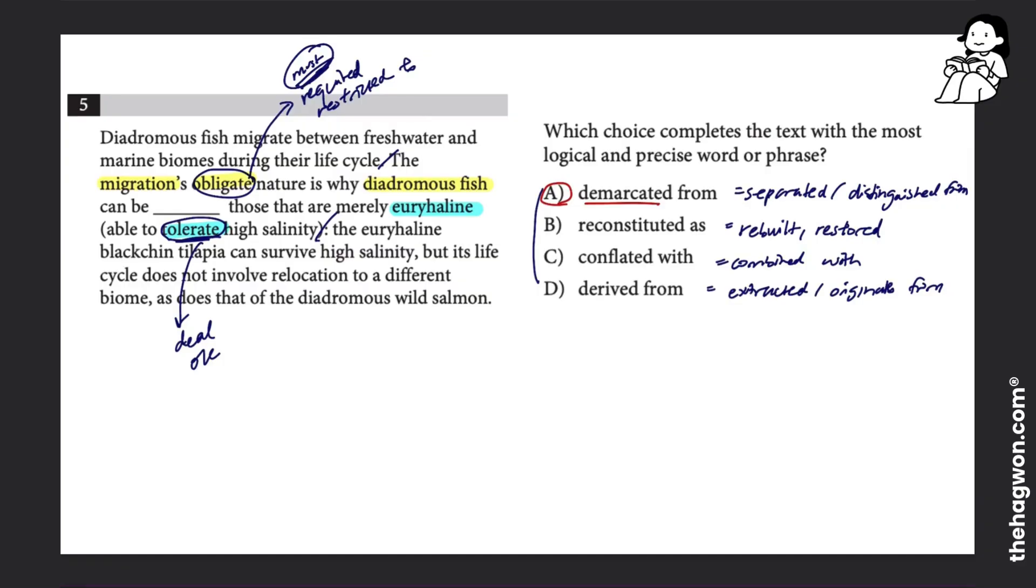And because I know that I'm trying to say these two are different, I know that because of this obligate versus tolerate, I know that reconstituted and conflated and derived—remember they all have some sort of A is connected with B, either one results from the other or you're combining A and B, it's kind of putting these two groups together—all answer choices B, C, and D. So for that reason, the correct answer to this question is answer choice A.